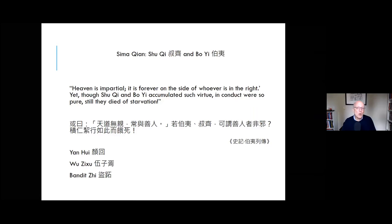This creates a problem for the historian, because for Sima Qian, a key function of writing history was to provide moral lessons. But what moral lesson do we learn about two virtuous men who, because of their virtue, died miserable deaths? After telling the story, Sima Qian comments: heaven is impartial, forever on the side of whoever is in the right. Yet though Shu Qi and Bo Yi accumulated such virtue, still they died of starvation.